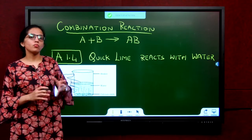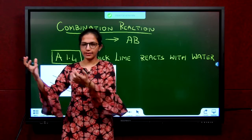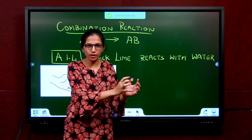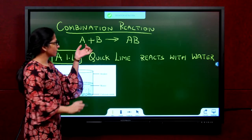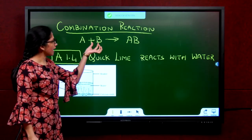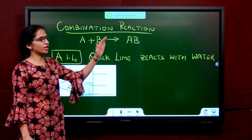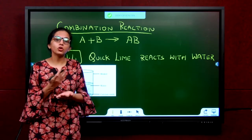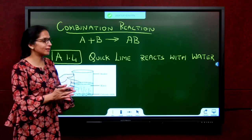Let us now understand what a combination reaction is. If I take many reactants — 1, 2, 3 — and combine all of them to make a single product, it is called a combination reaction. So, if you have two or more reactants combining to form a product, that is called a combination reaction. Please keep the notes with you; download from the notes section and use it as a reference while watching the videos.